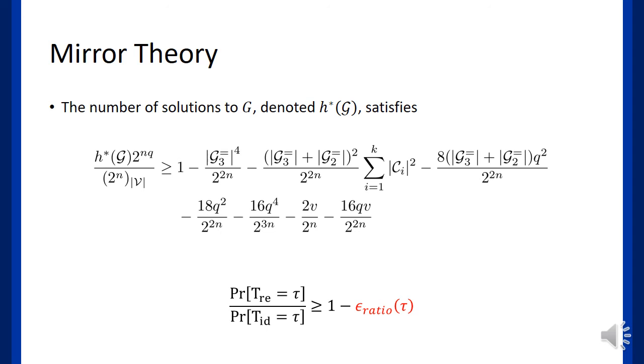So, to get a sharp estimation of epsilon_ratio, we try to make a specialized mirror theory that uses the previous observation. And here is our result.